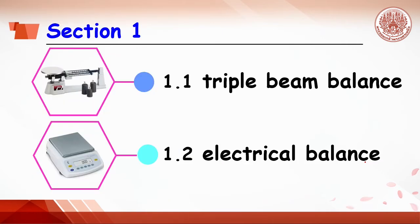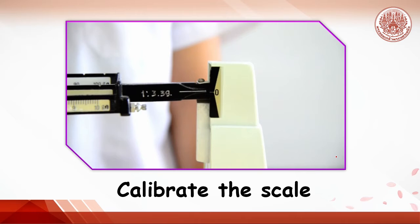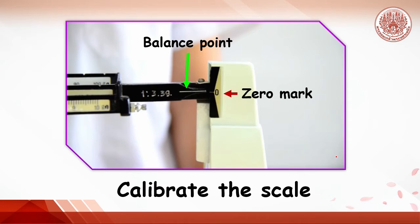Section 1: Weighing. Two types of balance will be used: the triple beam balance and the electrical balance. The object to be weighed is an aluminum cube. To use the triple beam balance, first calibrate the scale until the balance point is at the zero mark.